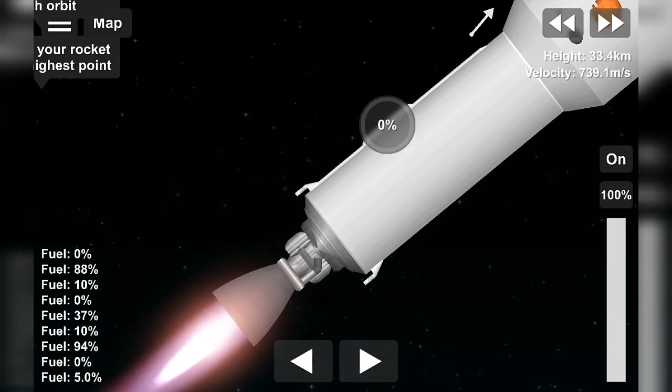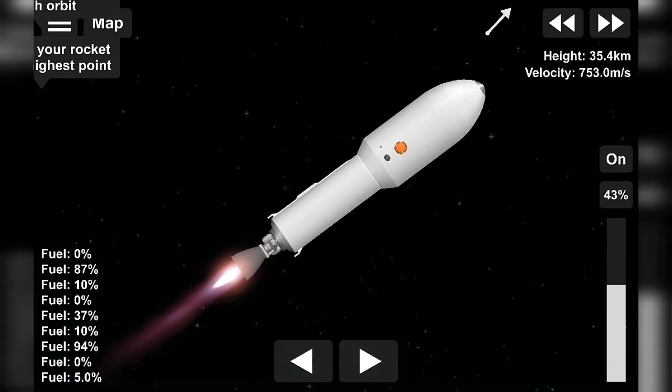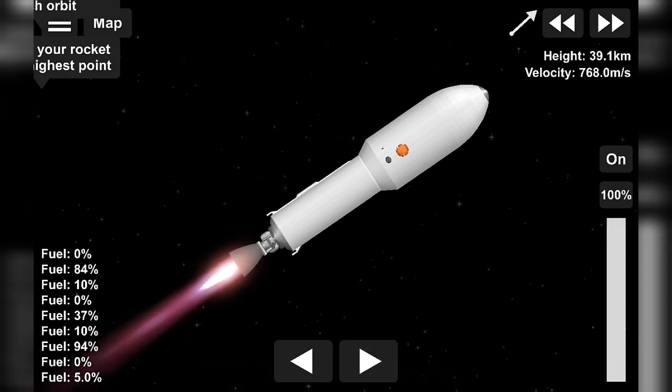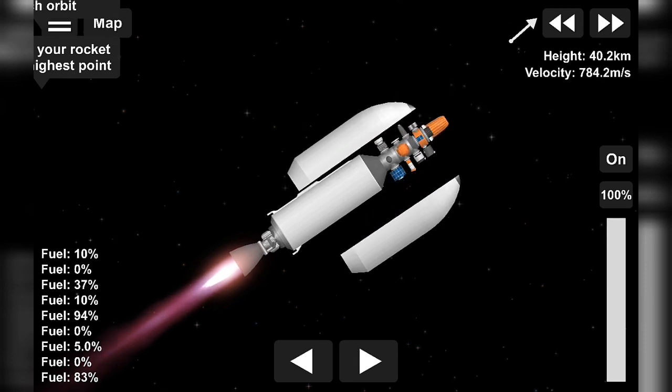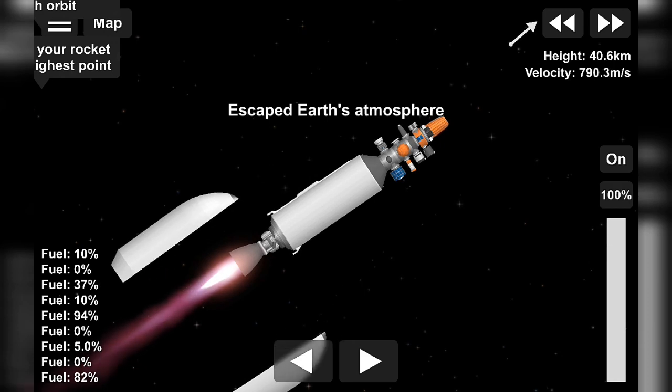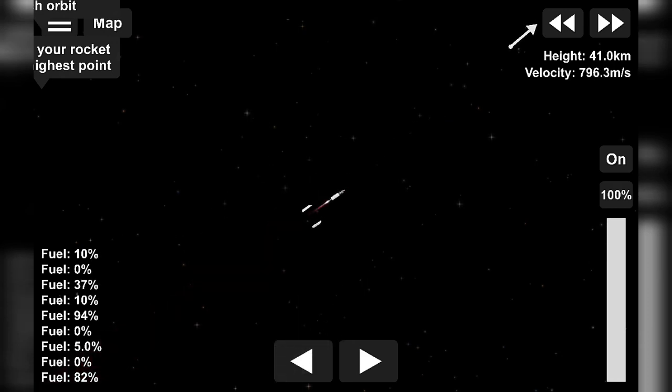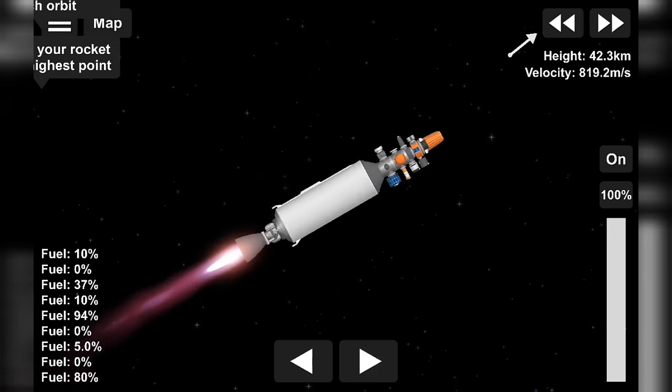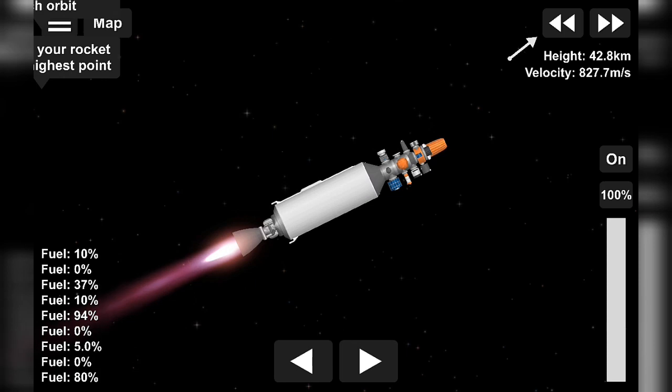Coming up in a few seconds we should have the fairing deployed. And there you can see the two fairing halves have separated and fallen away from the vehicle, exposing the 143 spacecraft to the vacuum of space. And as a reminder, our recovery vessel Miss Chief will be attempting to recover the fairing halves today from the water.